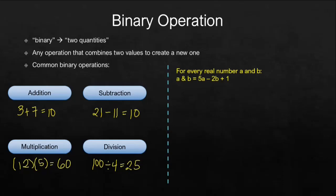So for instance, we have a real number a and b, and a binary operation using the symbol ampersand is defined by this: 5a minus 2b plus 1. So according to this one, we will multiply the first number, which is represented by a, to 5, and then subtract it by the product of 2 and the second number, and then finally add 1.